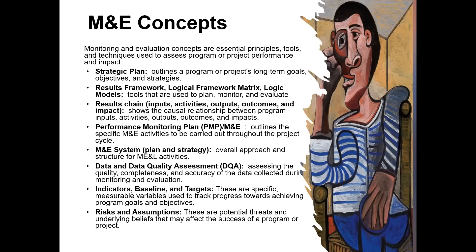The first thing you usually hear when discussing M&E is a strategic plan. A strategic plan is a comprehensive document that tells you what your program is going to do over a period of time. It spells out the objectives, the strategies, and even the strengths, weaknesses, opportunities, and threats of the program. It is a very important foundation document for discussing M&E.